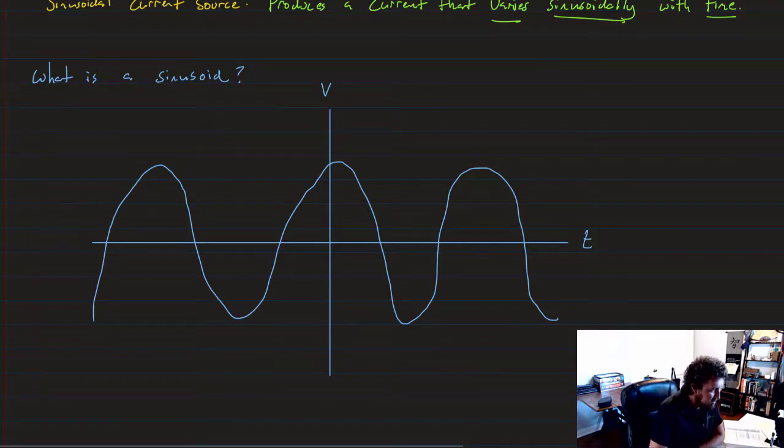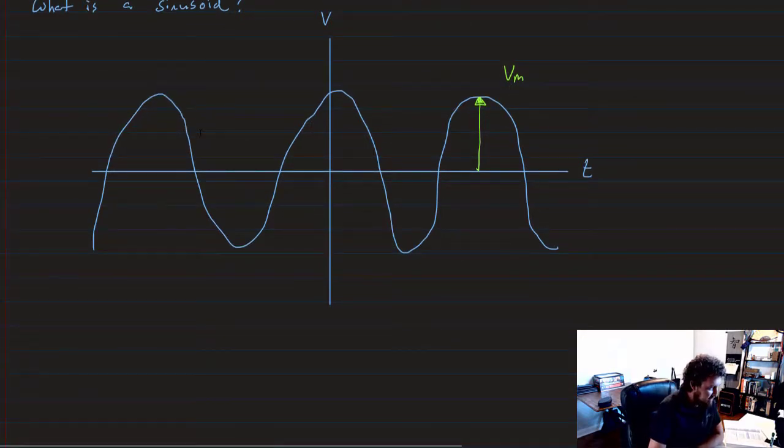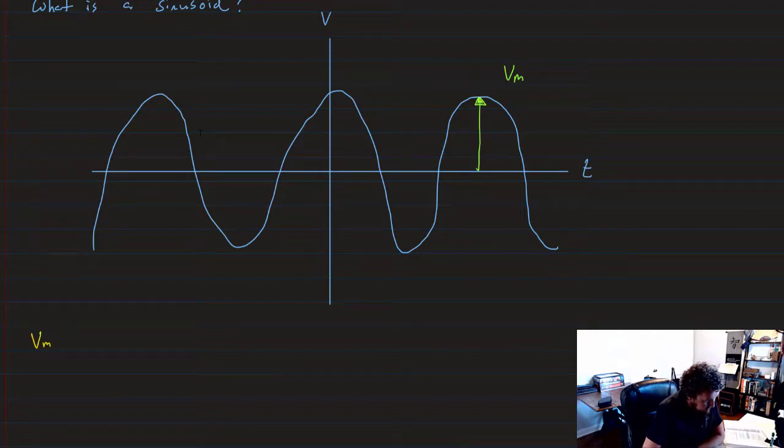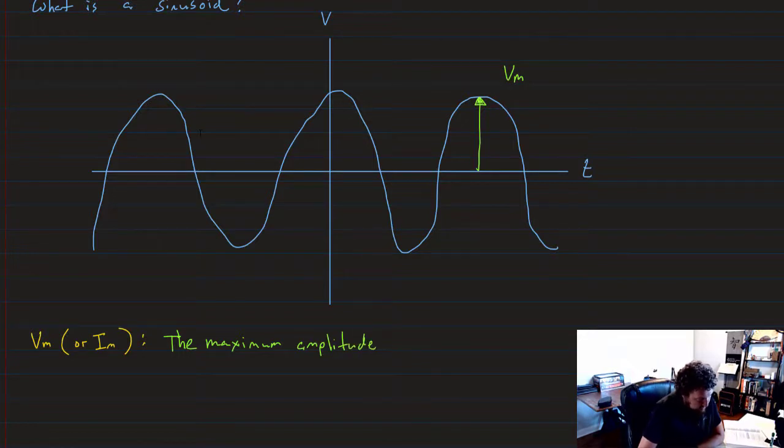Now, right off the bat, there are two important characteristics that we need to look at. The first one is the distance from zero to the very top of the peak. We're going to denote that as V sub M. Now, let's define it. V sub M, or I sub M, is the maximum amplitude of the voltage or current.